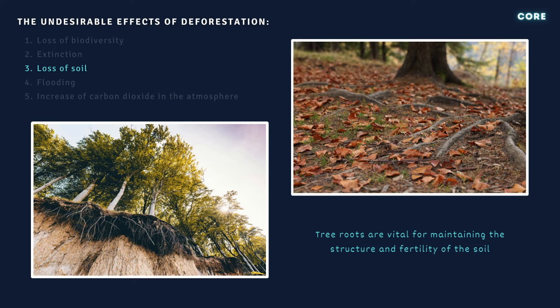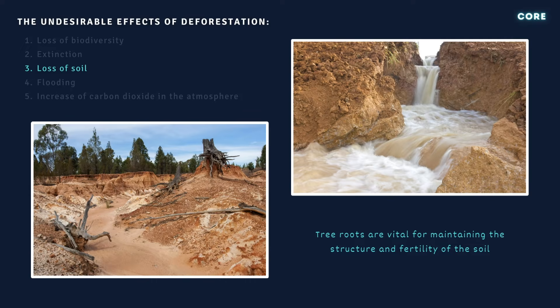Number three: forests play a crucial role in preventing soil erosion and maintaining soil fertility. The roots of trees help bind the soil, preventing it from being washed away by rainfall or blown away by the wind. When forests are cleared, the protective cover of vegetation is lost, resulting in the degradation and erosion of fertile topsoil.